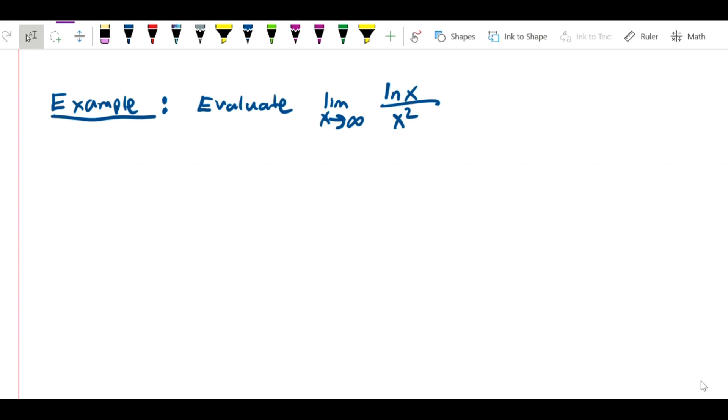So this is a different type of problem that we can evaluate by L'Hopital's rule. Recall that L'Hopital's rule applies if substitution gives us either 0 over 0 or infinity over infinity. Here we do in fact have infinity over infinity. How do we know that?